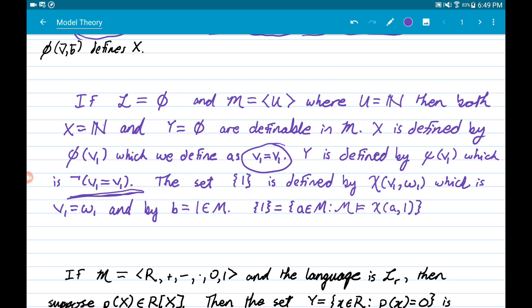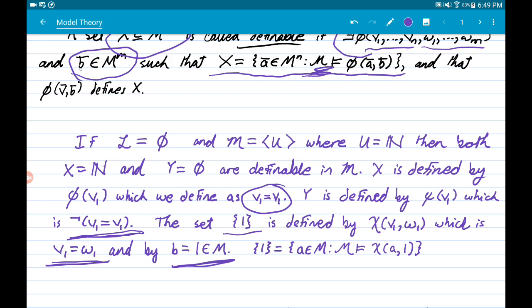I could also define the set {1}, the singleton of one, by the sentence chi. This time, I use two variables, and I take chi to be the equation of these two variables. I choose this element, my particular choice, out of the domain. And the singleton of one is precisely the set of things that satisfy chi with substitution into a, where I fix this variable as being one.